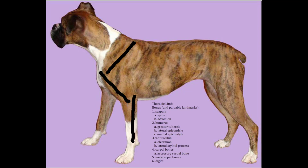Then we'll draw the radius cranial to the ulna throughout the antebrachium. For the carpal bones we'll focus on the accessory carpal bone and draw a little block of bones here to represent the carpal bones.